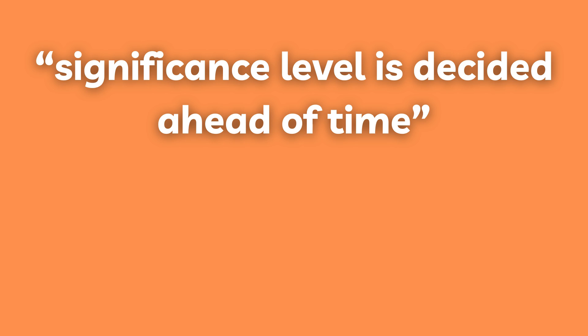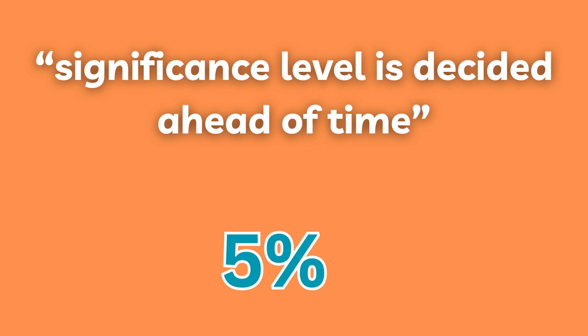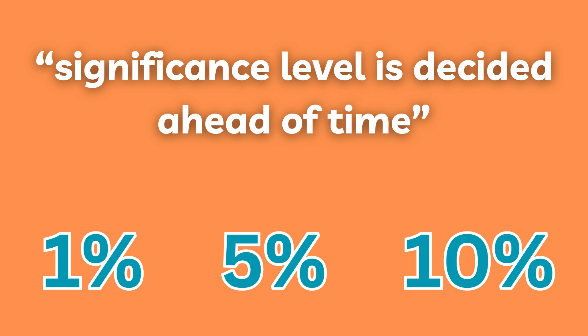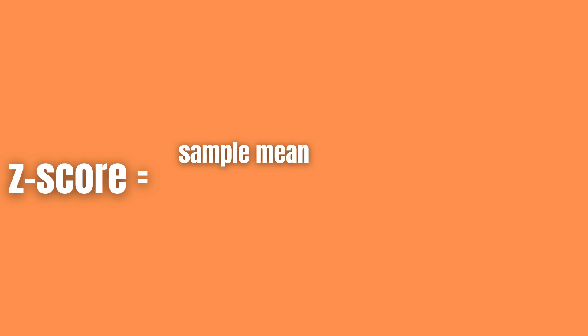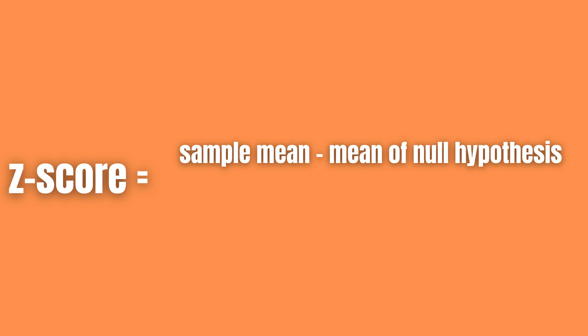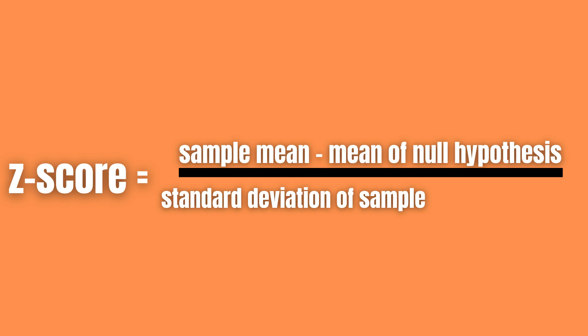The significance level is usually set as five percent, but can also be set as one percent or even ten percent. The p-value for a normal distribution can be determined by calculating the z-score for a given event using the formula: z-score equals sample mean minus mean of null hypothesis, divided by the sample standard deviation divided by the square root of the sample size.